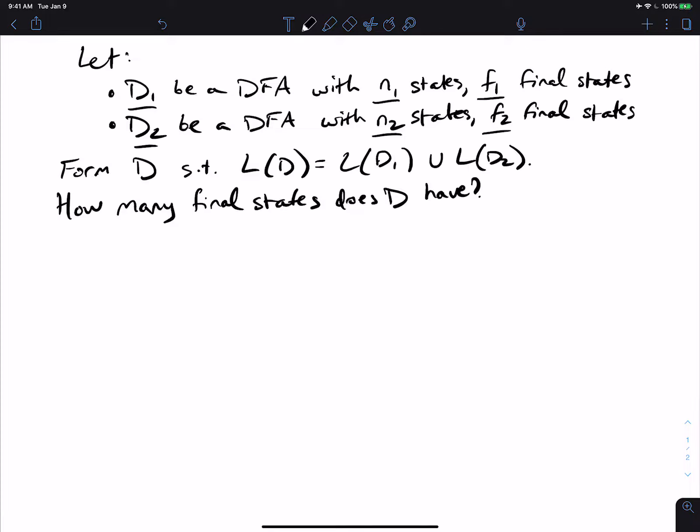So D1 has N1 states, F1 final states, D2 has N2 states, and F2 final. Now we're going to form the DFA D such that L of D is the union of the two languages of the two DFAs.